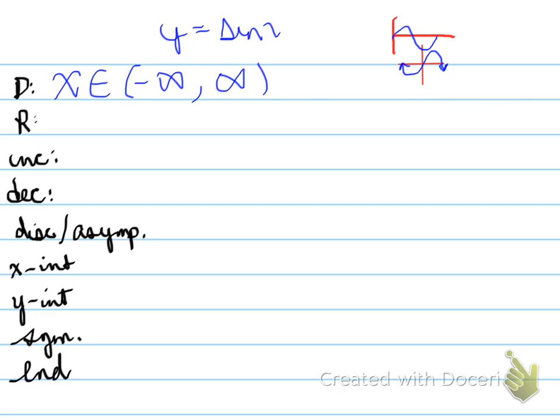What we see here is the domain from left to right is from negative infinity to positive infinity. The range is the same as the cosine function, going from negative 1 to positive 1.